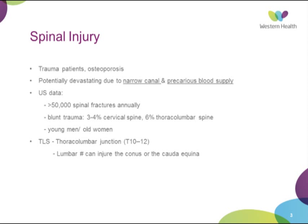In terms of some US data — there wasn't much Australian data on spinal fractures specifically — in the US there are over 50,000 spinal fractures annually. In blunt trauma, about 3-4% are cervical and about 6% occur in the thoracolumbar region. It tends to occur in two age brackets: younger men from high-energy impact trauma, and older women with osteoporotic fractures. The thoracolumbar junction is quite important and lumbar fractures can injure the cauda equina, cord, or conus.